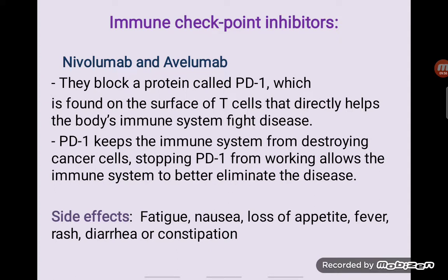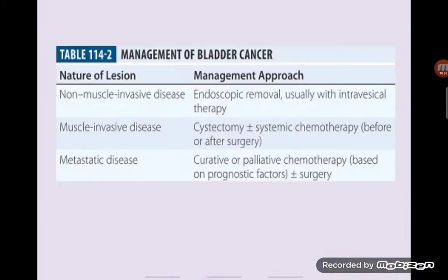The most common side effects of checkpoint inhibitors are fatigue, nausea, loss of appetite, rash, diarrhea, or constipation. That covers all we have regarding the treatment of bladder cancer. This was only pharmacological treatment — we talked about chemotherapy, immunotherapy, and immune checkpoint inhibitors. You are aware there might also be a need for surgical intervention, but that is not part of today's lecture. There is a table here that gives you a general overview of the management of bladder cancer depending on the nature of the lesion. I hope you found this useful.